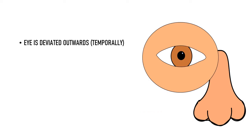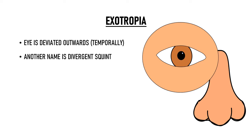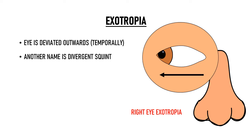When the eye is deviated outwards, that is temporally, towards the ear, then that type of squint is known as exotropia. Another name for exotropia is divergent squint. So this patient's right eye is deviated out, so he has right eye divergent squint or right eye exotropia.